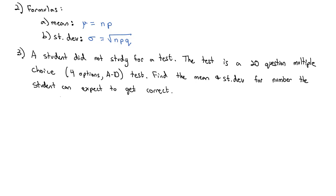We want to find the mean and standard deviation for the number the student can expect to get correct. Well, first let's identify the variables in our study. We do definitely have a binomial distribution because there's a fixed number of trials. It's a 20 question test. There is also only two options really on the test from the student's view. Success, getting the question right, and failure, getting the question wrong.